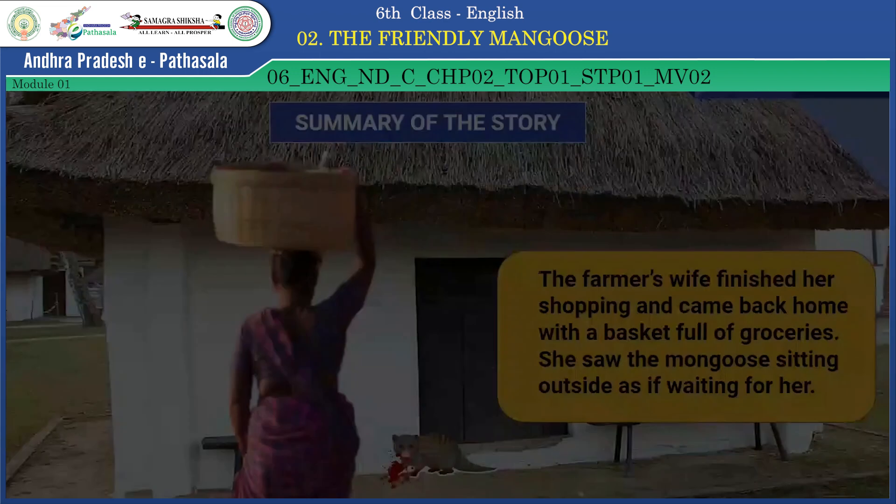Question number five: Match the following words with their meanings. The words are: companion, tiny, grocery, screamed, smeared. Companion means associate or partner. Tiny means very small. Grocery means shop. Screamed means cry of emotion. Smeared means coated carelessly.